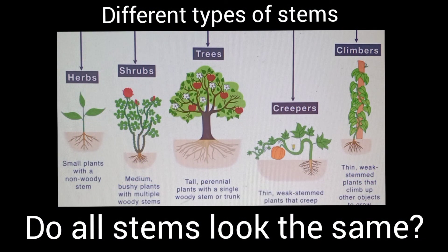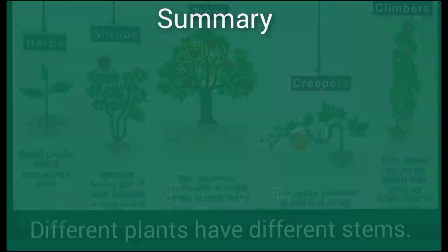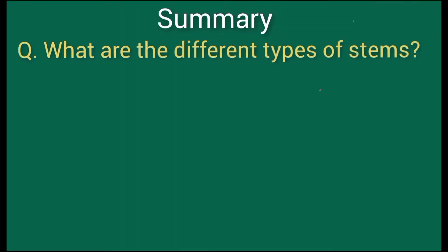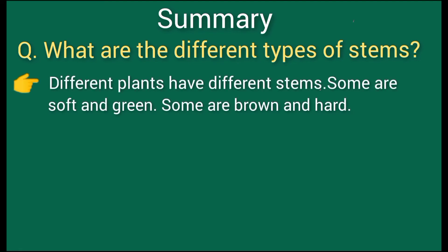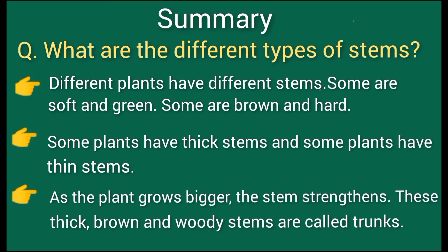So children, do all stems look the same? No, not all stems look the same. Different plants have different stems. Some are soft and green, and some are brown and hard. Some plants have thick stems and some have thin stems. As the plant grows bigger, the stem strengthens. These thick, brown, and woody stems are called trunks.